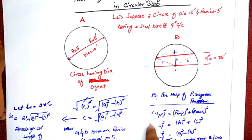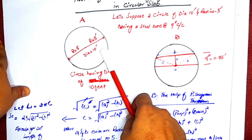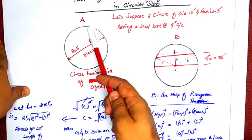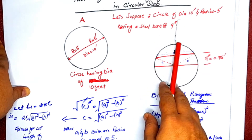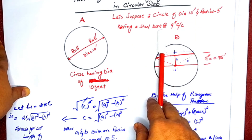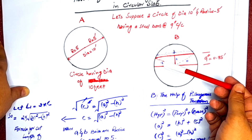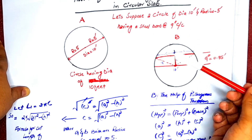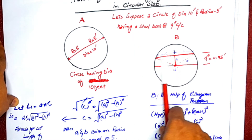In a circular slab, one key dimension is its diameter and the other is its radius. I draw here a circle of radius five feet and diameter ten feet, as shown in the figure. The steel bars are placed at nine inches center to center, which means the distance between two bars is nine inches, or 0.75 feet.